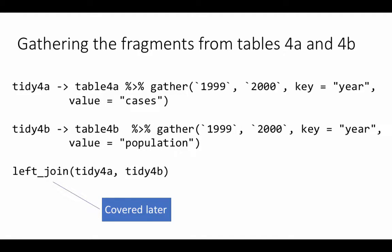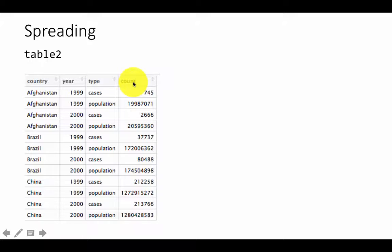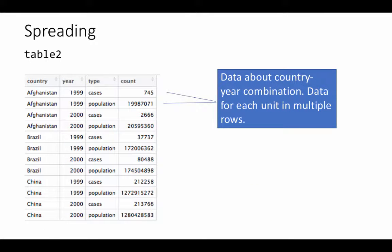After looking at gathering, let's look at one more kind of data tidying. We haven't looked at the situation with table 2. In table 2, we had the country and year, but instead of cases and population in two different columns as we would have liked in tidy form, we have a type column indicating cases and population, with the actual value sitting in a column called count. Data that should belong to two columns is sitting in one single column. So we have to break out that single column into multiple columns using the operation called spreading — spreading the data from one column into multiple columns.